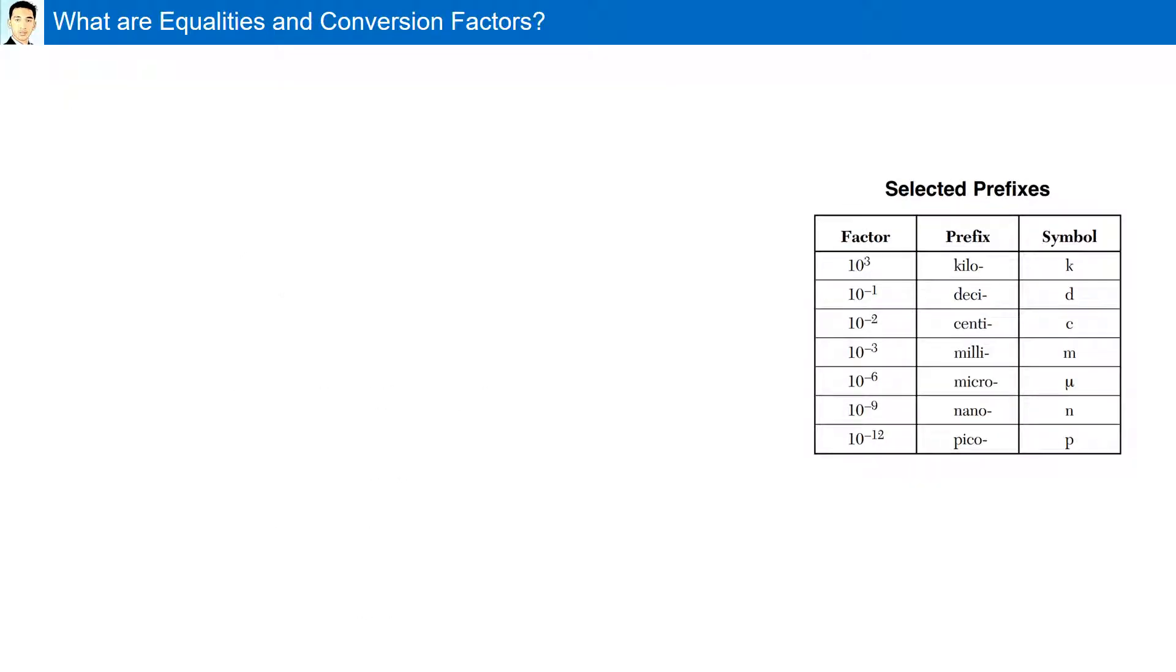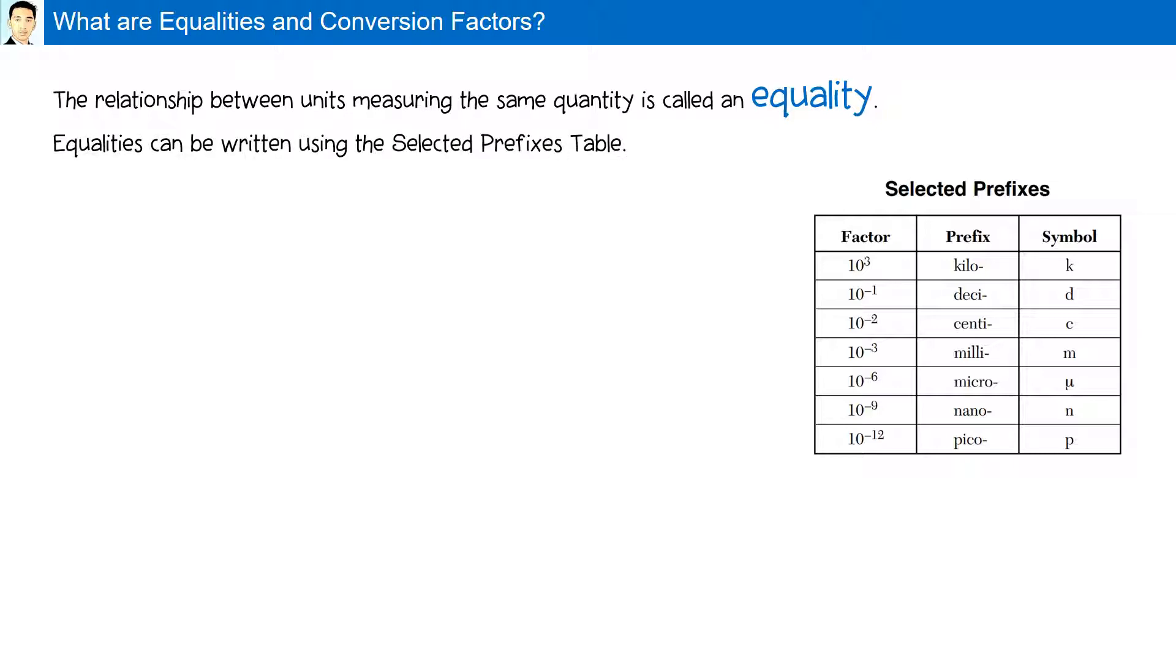What are equalities and conversion factors? The relationship between units measuring the same quantity is called an equality. Equalities can be written using the selected prefixes table. For example, 1 centimeter is equal 10 to the minus 2 meters.